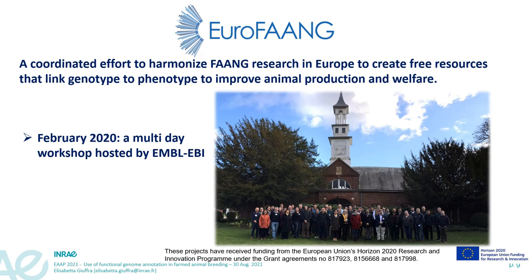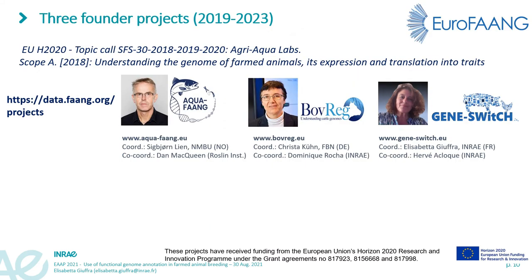EuroFANG is a recent coordinated effort to harmonize FANG research in Europe. It aims to create free resources that link genotype to phenotype to improve animal production and welfare. The effective kickoff was in February 2020, just days before the pandemic lockdown, during a multi-day workshop hosted by EMBL-EBI in Hinxton. EuroFANG has been initiated by three founder projects: AquaFang, BovReg, and GeneSwitch. These projects replied to a topic called SFS-30, aimed at understanding the genome of farmed animals, its expression and translation into traits. The project spans four years.